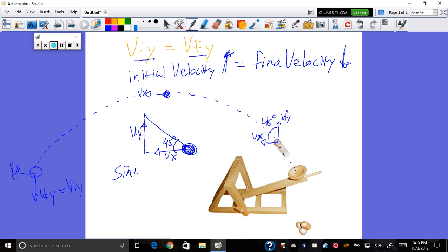So what does the sine of 45 degrees mean? V-Y over my hypotenuse, right? And my cosine of 45 degrees is adjacent, V-X over the hypotenuse. Well, at 45 degrees, they're going to be equal.